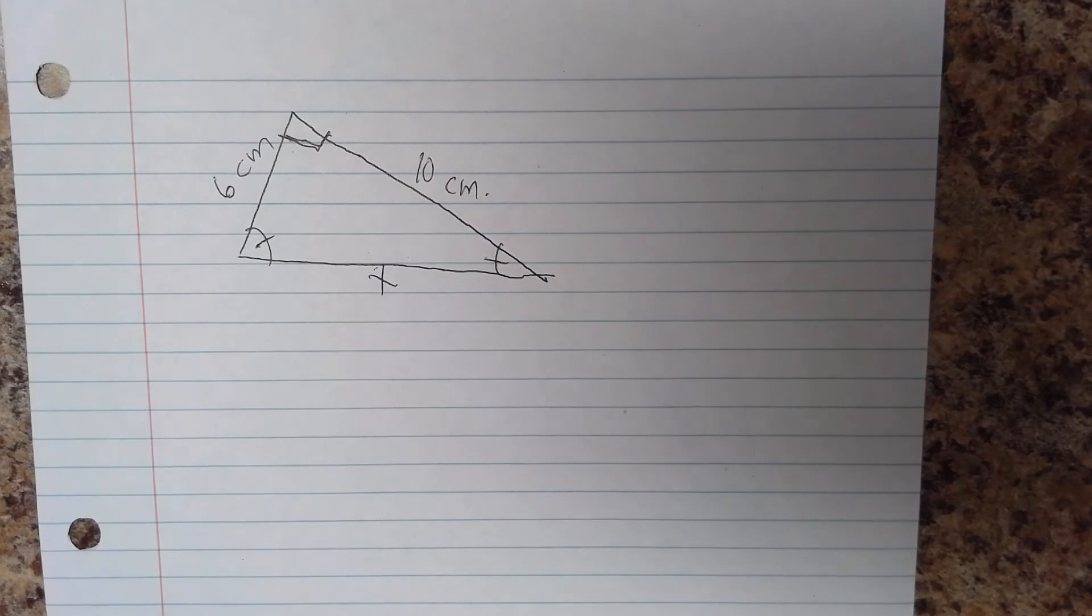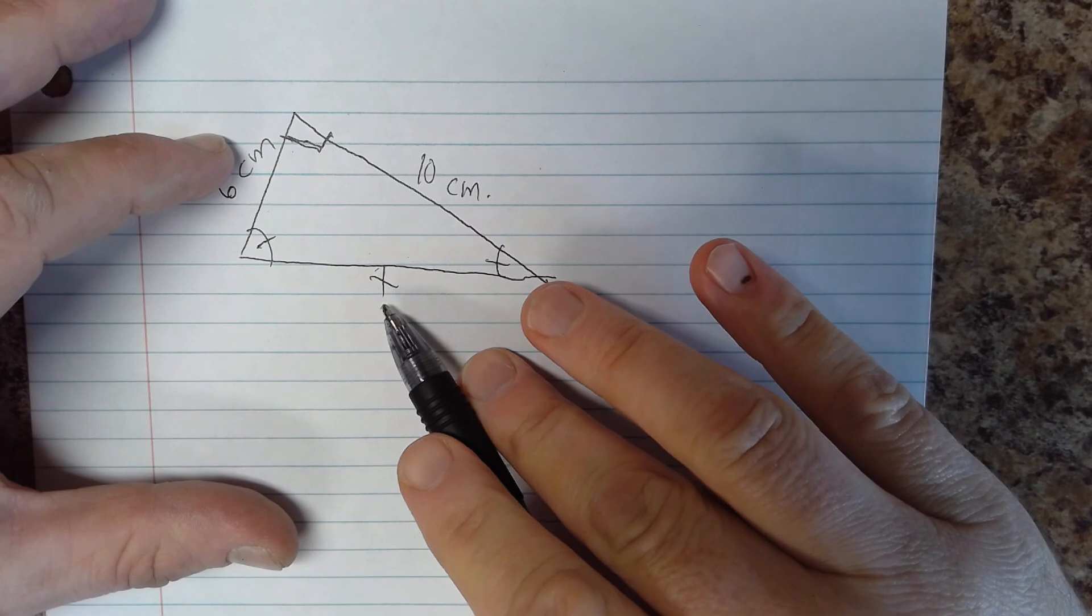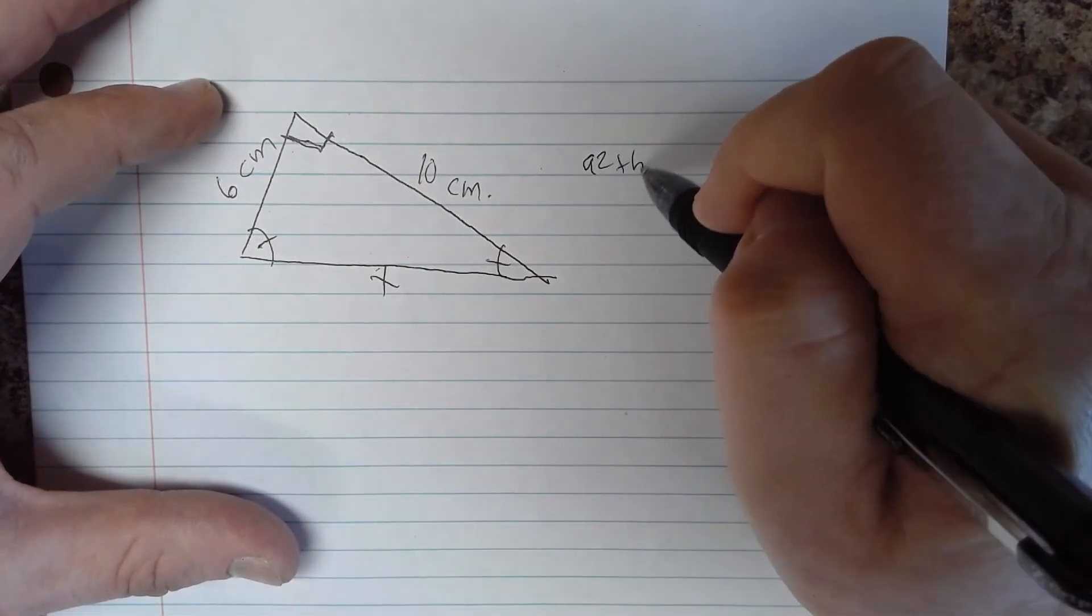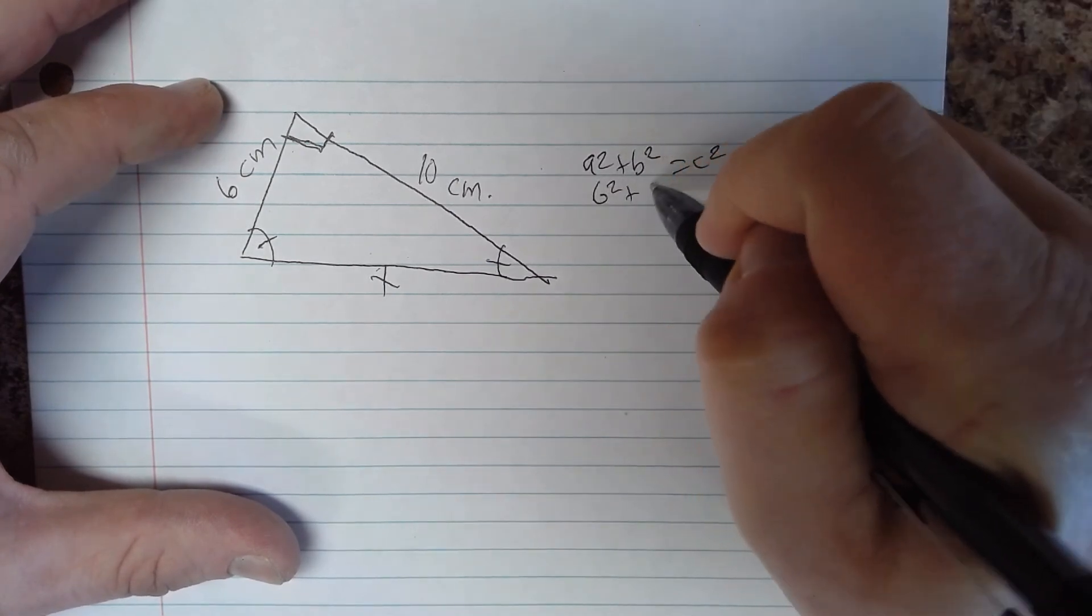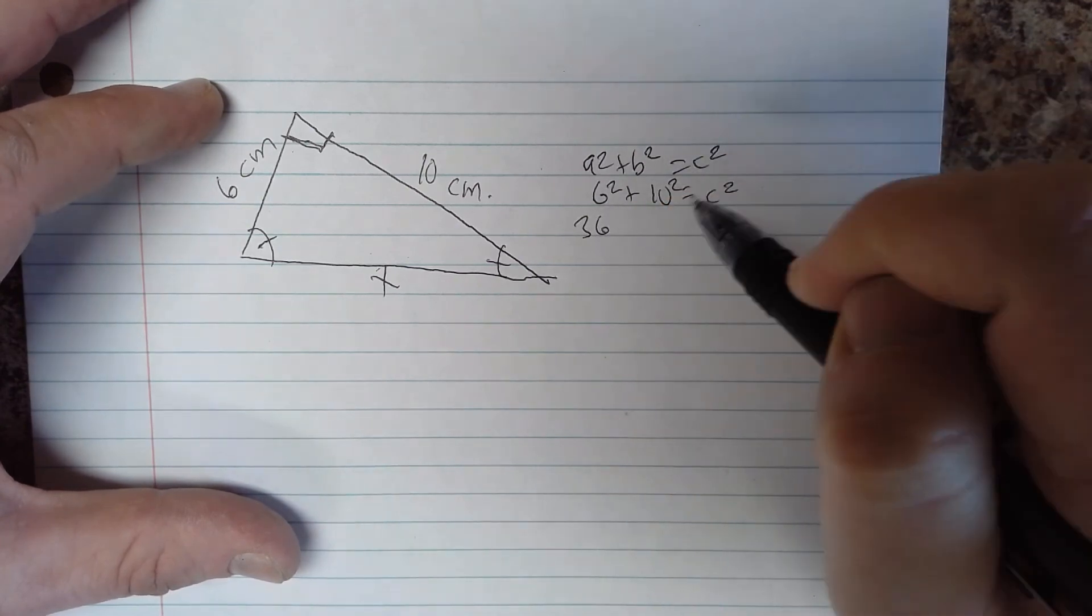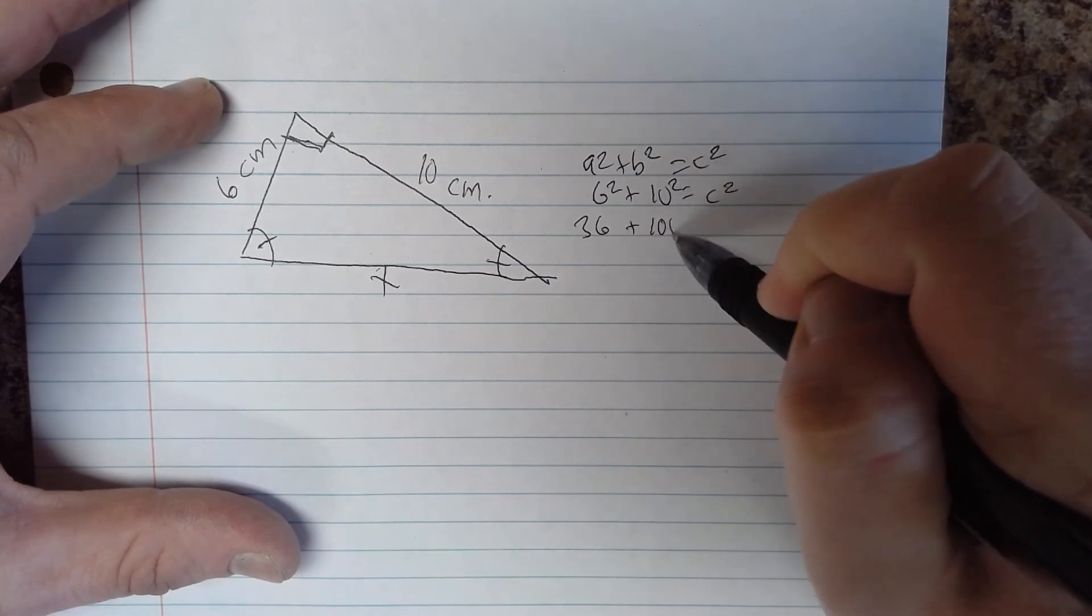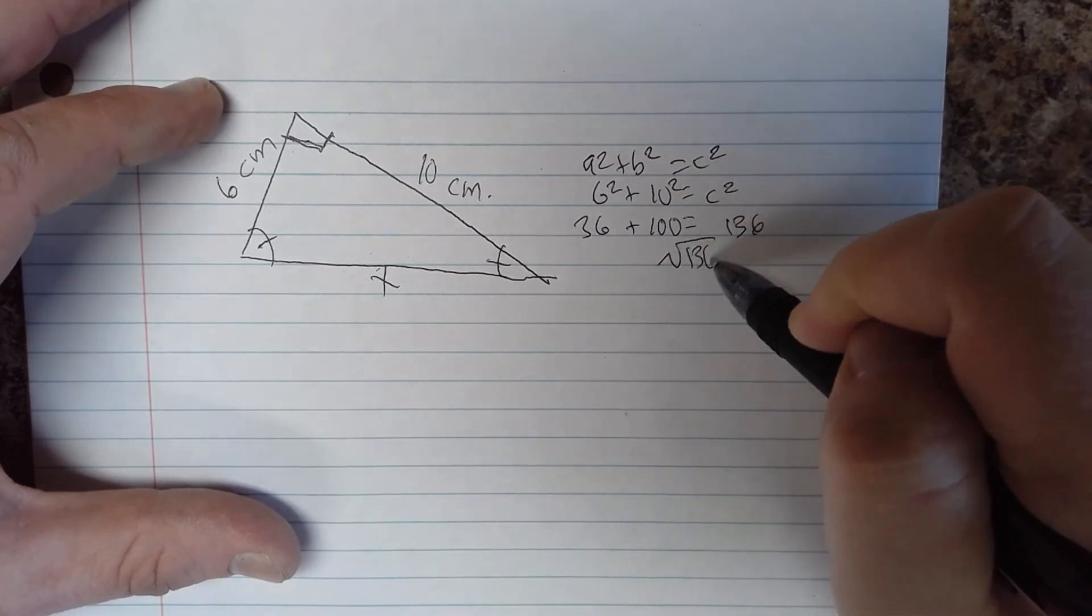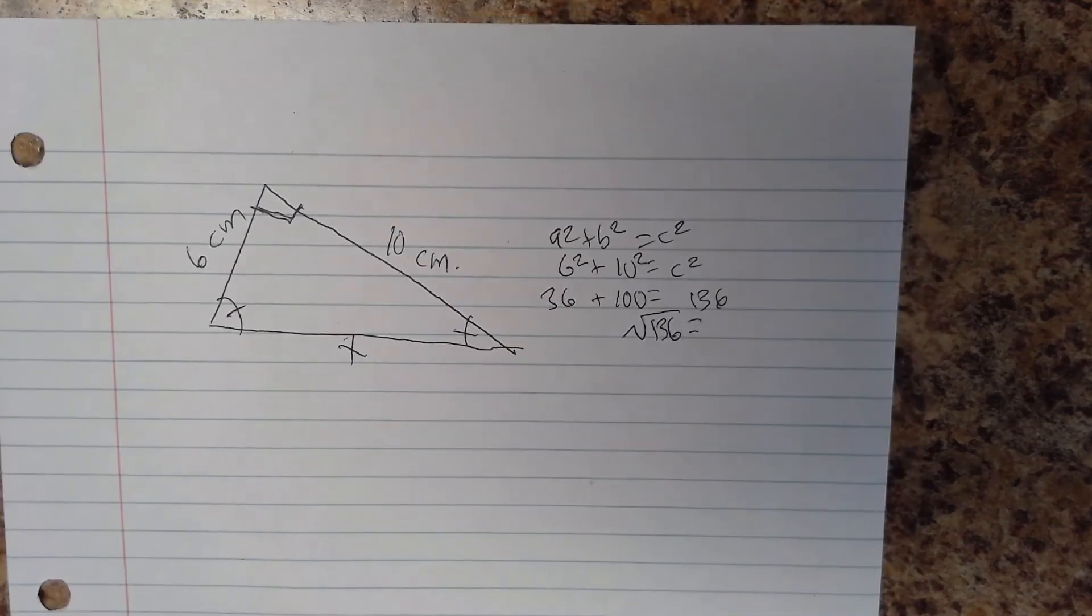To find this side here we can just use Pythagorean theorem. We know the middle side and the short side. The long side is always the side opposite the right angle. A squared plus B squared equals C squared, where 6 squared plus 10 squared equals C squared. 36 is 6 squared, 10 squared is 100, that is 136.